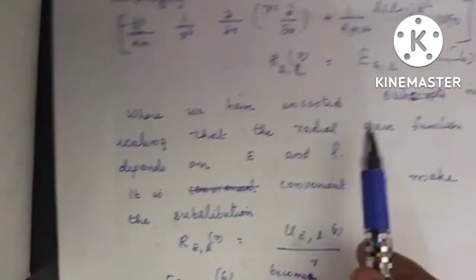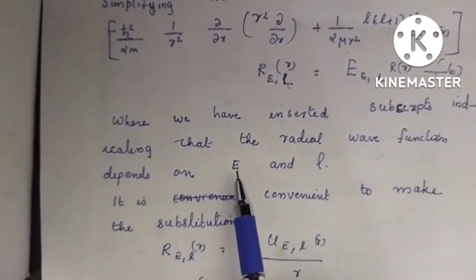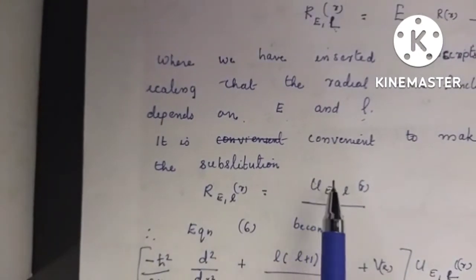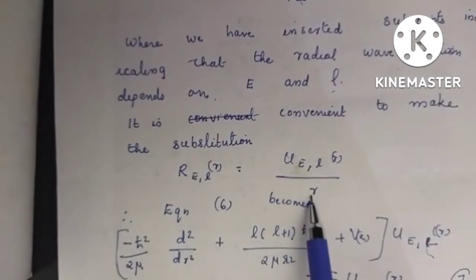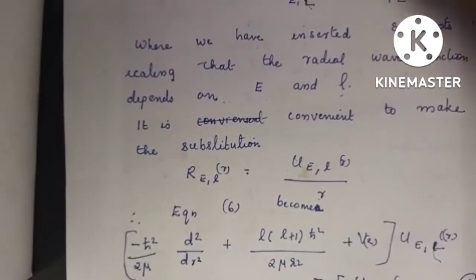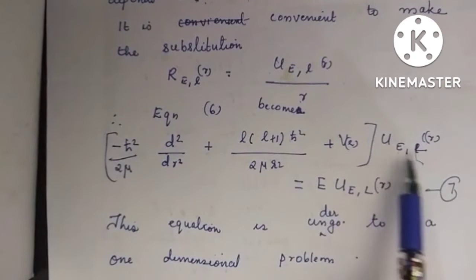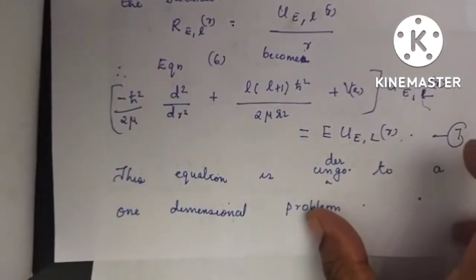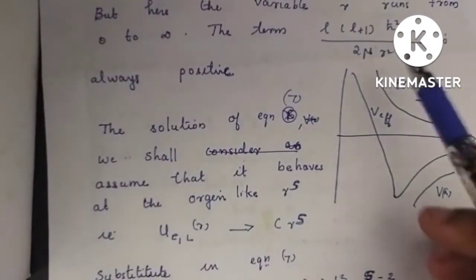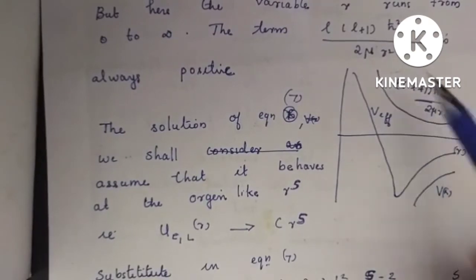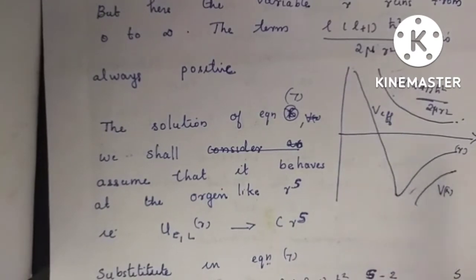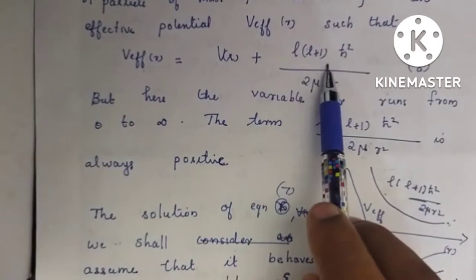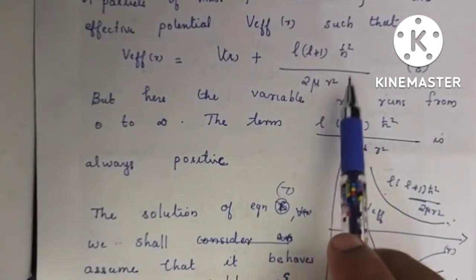The radial wave function depends on quantum numbers n and l. It is convenient to make the substitution R(r) equals u(r) divided by r, which reduces the problem to a one-dimensional Schrödinger equation. This equation is under a one-dimensional problem. The effective potential is the sum of attractive and repulsive terms: V_eff equals V(r) plus l(l+1) h-bar squared divided by 2mu r-squared. That is the effective potential.